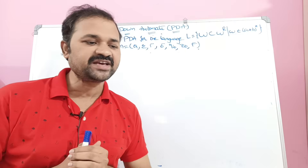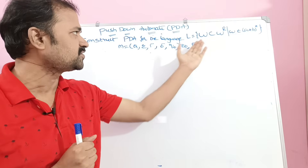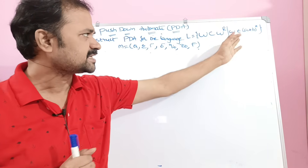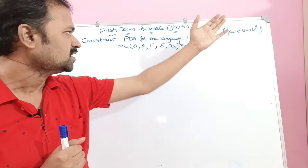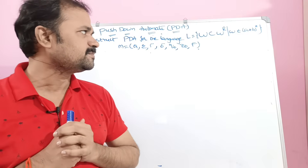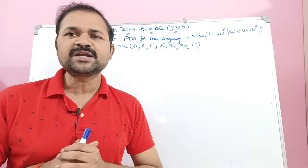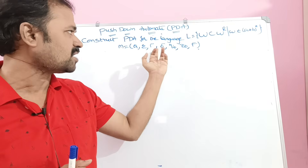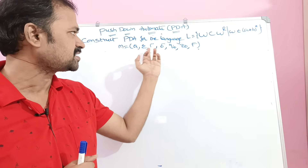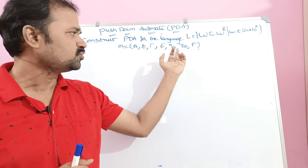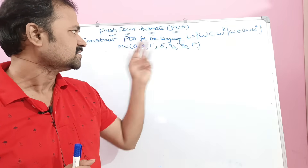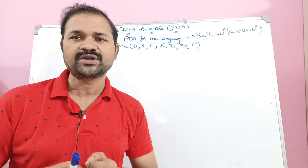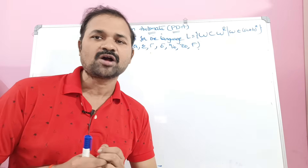Construct a PDA for the language L = {WCW^R} such that W belongs to (A+B)*. We know that PDA is represented by 7 tuples: M = (Q, sigma, tau, delta, Q0, Z0, F). First let us find out delta, and from delta we can find out all the remaining tuples.